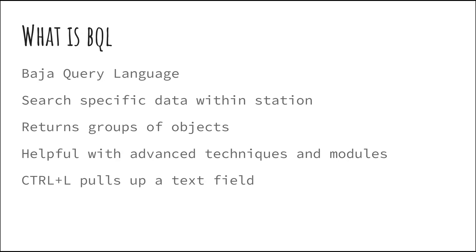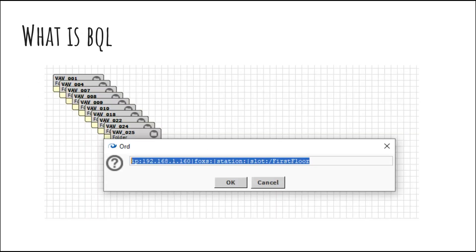At any point in time in Niagara within the station, you can use Control+L to pull up a text field that allows you to navigate to any manually input ORD, which stands for Object Resolution Descriptor — an internal Niagara URL. These ORDs are what you get when you copy an individual component inside of a station. Here we can see I have a floor with VAVs under it, and hitting Control+L brings me up to this particular ORD.